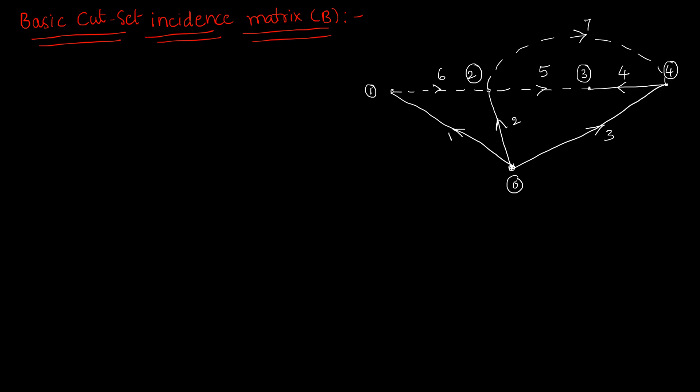Hello everyone. In this video, we are going to learn about the basic cut set incidence matrix, that is B. In the previous video, we covered the element node incidence matrix A cap, the bus incidence matrix A, and then the branch path incidence matrix K. And later, after deriving this matrix B, we are going to relate B with matrix A and also with K.